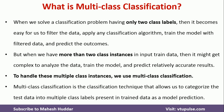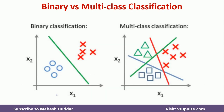Multi-class classification is again a classification technique — it is not something different — which allows us to categorize the test data into multiple classes. This is a pictorial representation of binary versus multi-class classification. On the left-hand side, we have binary classification where the data has only two classes, and we can classify this data relatively easily. But on the right-hand side, we have data with more than two classes. Because of that, we cannot use traditional classifiers, and we have to use multi-class classification technique here.